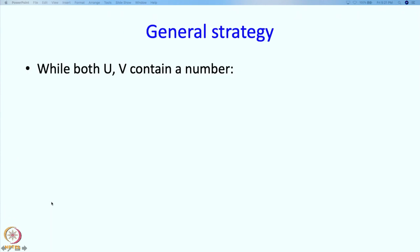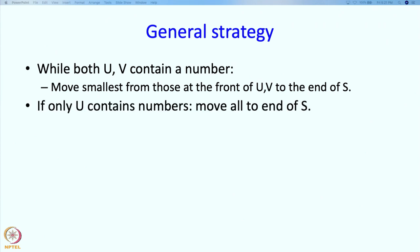So what is the general strategy? While both U and V contain a number, move the smallest from those at the front of UV to the end of S. If only U contains numbers, then that means everything in V has already been moved to S, and so therefore move everything in U to the end of S. Similarly for V.